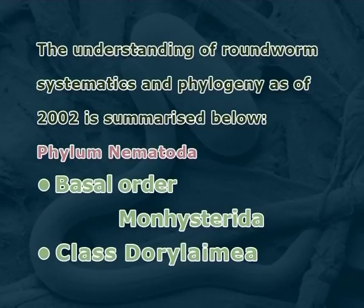Together with the Scalidophora, Nematoidea forms the Introverta. It is entirely unclear whether the Introverta are in turn the closest living relatives of the enigmatic Gastrotricha. If so, they are considered a clade called Cycloneuralia. However, much disagreement occurs both between and among the available morphological and molecular data. The understanding of roundworm systematics and phylogeny as of 2002 is summarized in the literature.